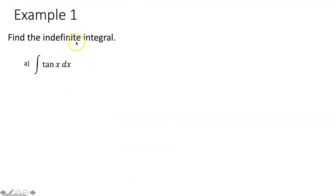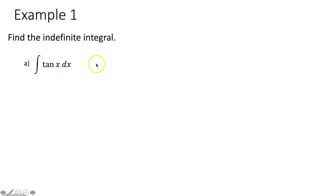Example one: find the indefinite integral of tangent of x dx. This is the integral of one of your six basic trig functions, so hopefully you have this memorized and this problem is done in three seconds. The integral of tan x dx equals the negative natural log of |cos x| plus c, or the natural log of |sec x| plus c. Either is acceptable. But let's say you forgot — we can find this integral using u substitution.